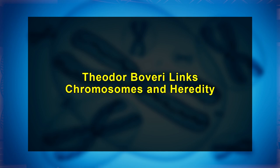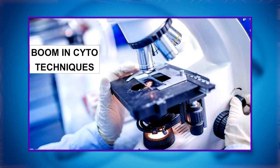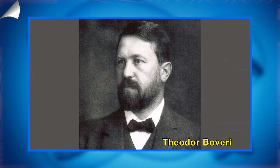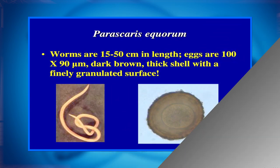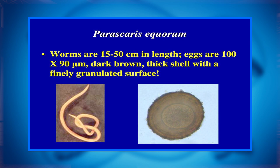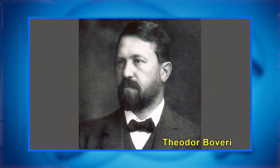Let's now discuss Theodor Bowery's links between chromosomes and heredity. The end of the 19th century was marked by advancements in cytological techniques and microscopy. During this period, German embryologist Theodor Bowery took Fleming's findings to the next level by providing the first evidence that chromosomes of germline cell lineages provide continuity between generations. Bowery found evidence for this hypothesis through his research of early development in the roundworm species Ascaris megalocephala, now known as Paracharis equorum.